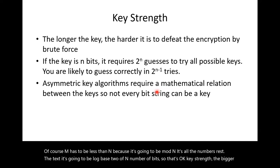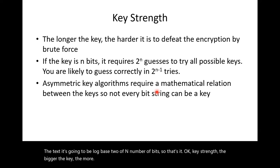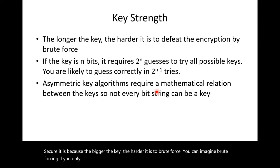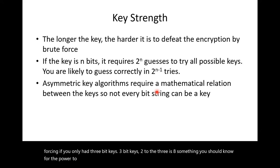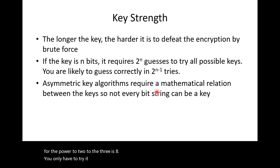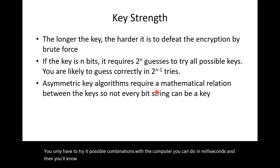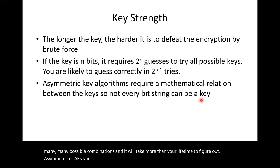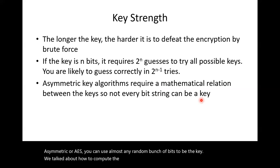Key strength: the bigger the key, the more secure it is, because the bigger the key, the harder it is to brute-force. With only 3-bit keys, 2^3 = 8 — you only have to try 8 possible combinations, which a computer can do in milliseconds. So you want to use big numbers so there are many, many possible combinations and it will take more than your lifetime to figure out. For AES, you can use almost any random bunch of bits as the key. For RSA, computing the keys requires specific calculations — you cannot use any arbitrary bunch of bits.